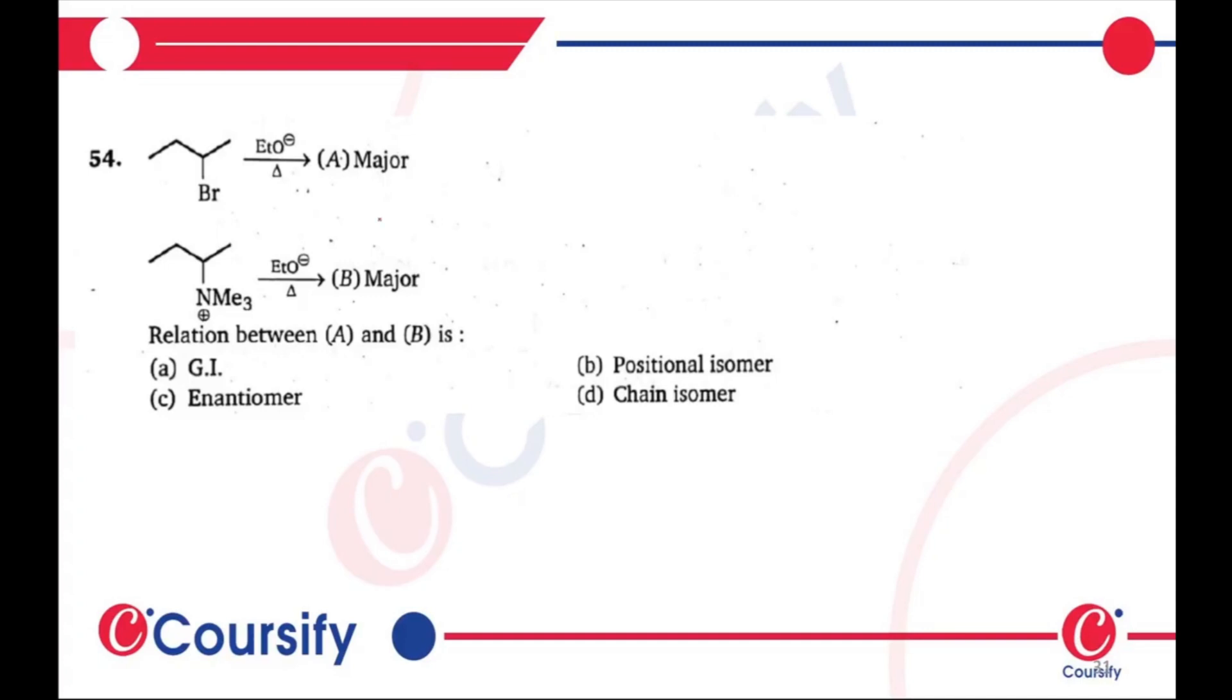Ethoxide gives major product B. What is the relation between these products A and B major?